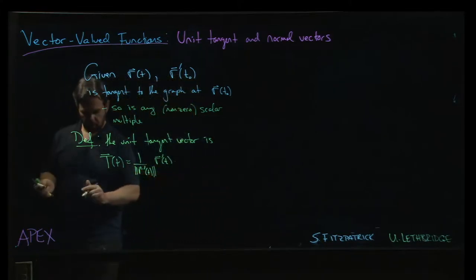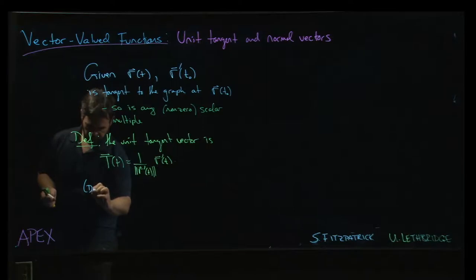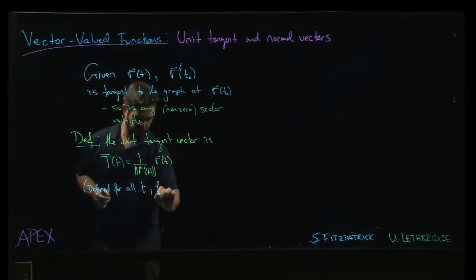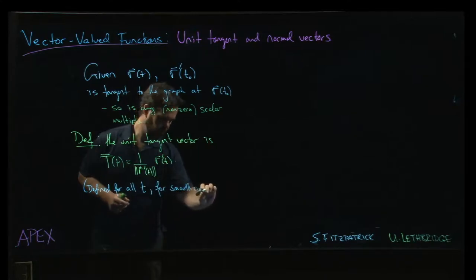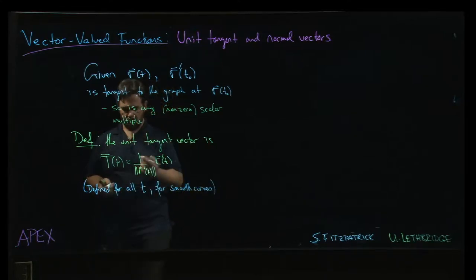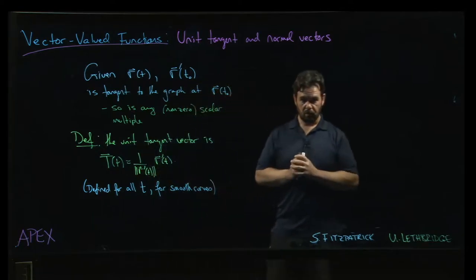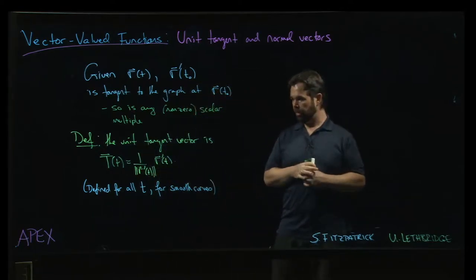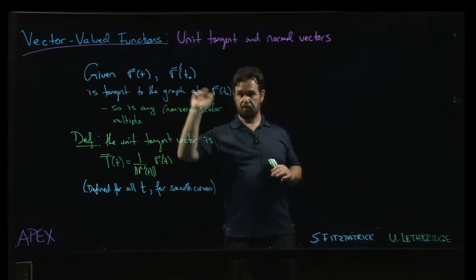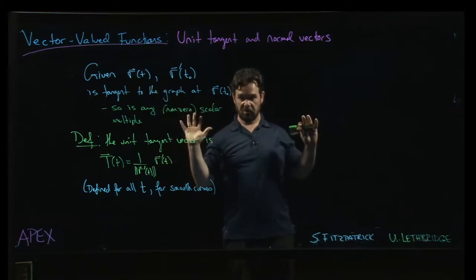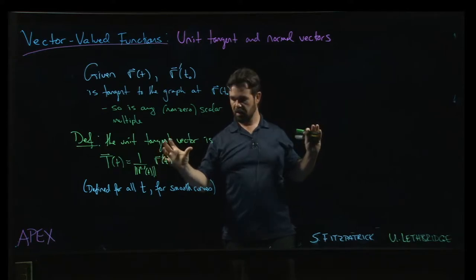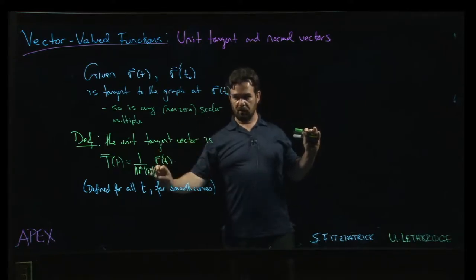And one thing to note is that this is going to be defined for all t values as long as we stick to smooth curves. Remember that there are two conditions required for a curve to be smooth. One is that the position function defining that curve has to be differentiable, so r prime of t has to exist at every point. But it also has to be non-zero. For a smooth curve, the derivative can never be zero.